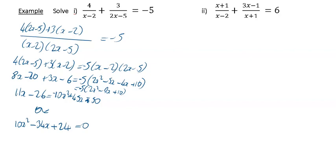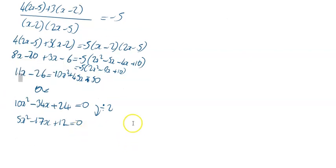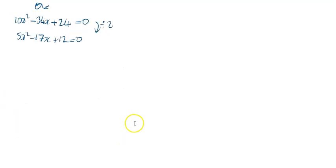That's a fairly difficult looking quadratic, but everything is divisible by two, so divide everything by two first of all to give you 5x squared minus 17x plus 12 is equal to zero. That should make it a bit easier to factorize.